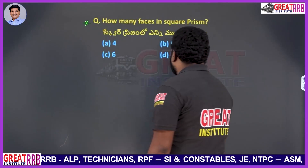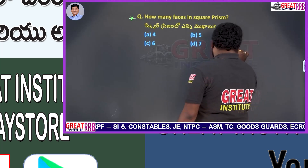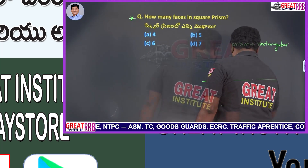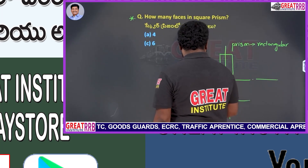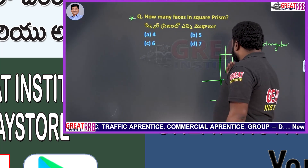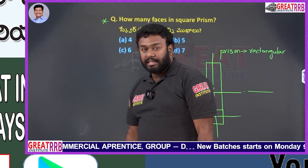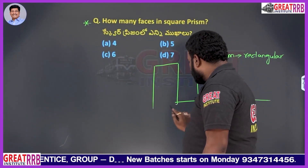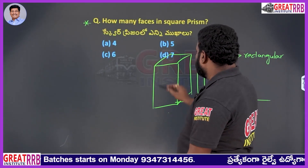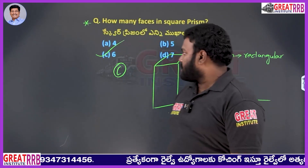How many faces does a square prism have? Options: A) 4, B) 5, C) 6, D) 7. A square prism has four sides plus a top and bottom face. Counting: first, second, third, fourth side faces, plus bottom and top — that is 1, 2, 3, 4, 5, 6. So option C, 6 faces, is the right answer.